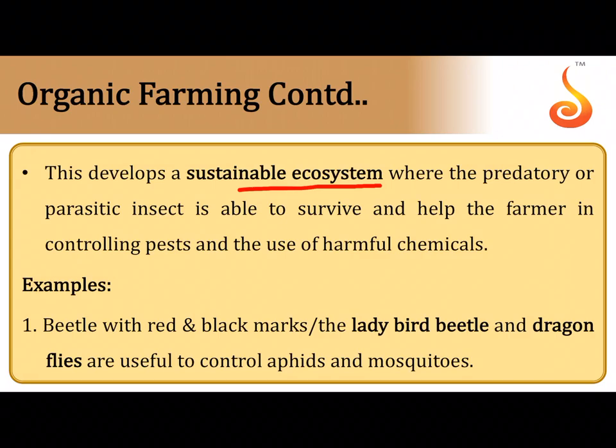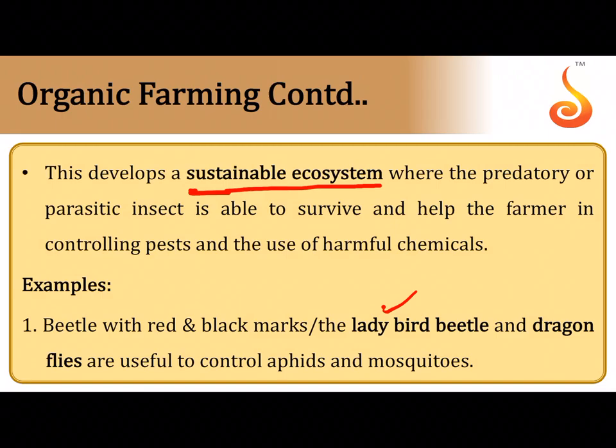By doing so, we maintain a sustainable ecosystem without introducing foreign agents — we use available resources and maintain the delicate balance in the ecosystem. For example, ladybird beetles and dragonflies can be used to control sap-suckers like aphids that destroy crop plants; dragonflies also help keep mosquito populations in check. Using these natural predators avoids spraying insecticides, which would enter the food chain, poison the soil, and cause diseases.